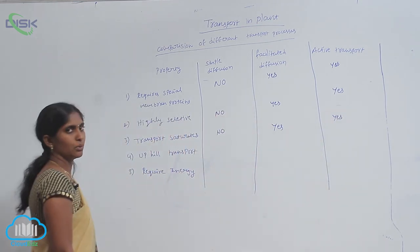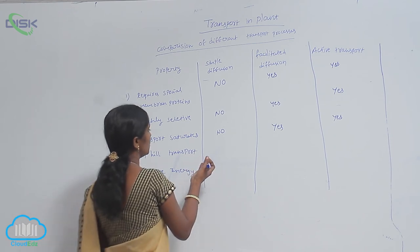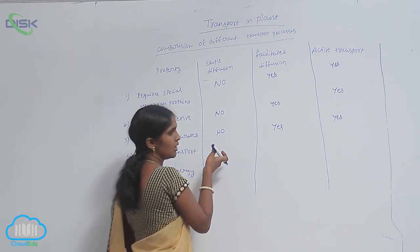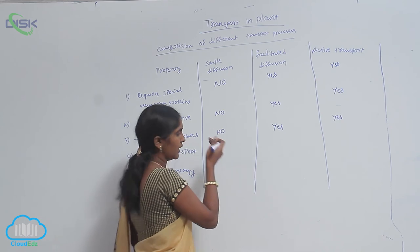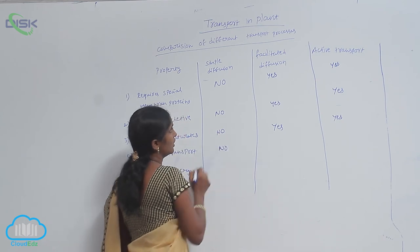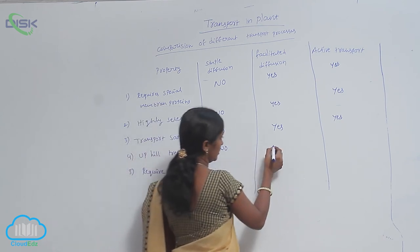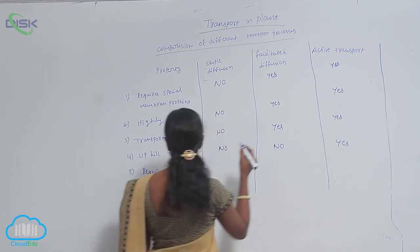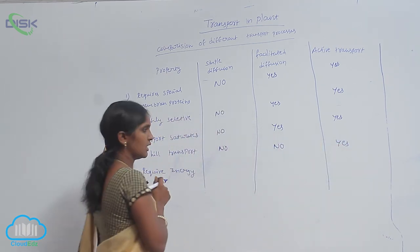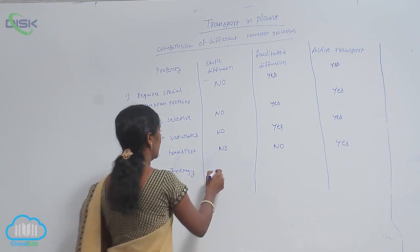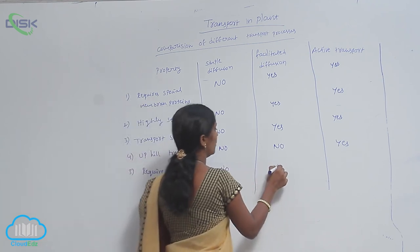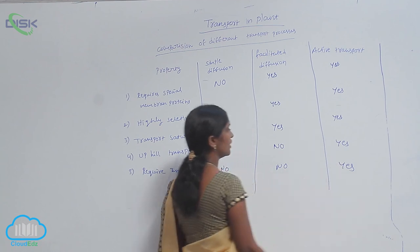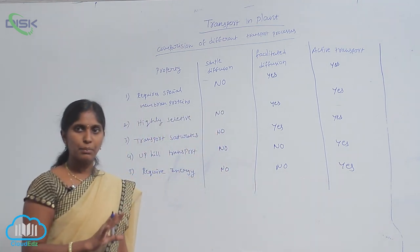For uphill transport: simple diffusion is no — it is downhill transport because no energy is required. Facilitated diffusion also requires no energy, so it is also no. But active transport does require energy, so it is yes. These are the comparisons of the three transport processes.